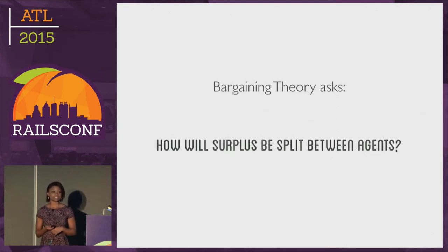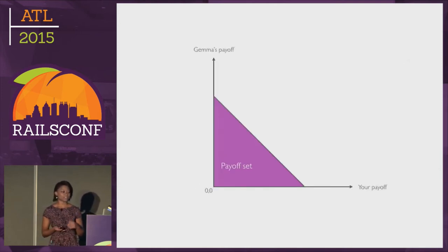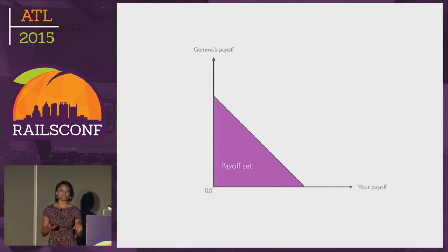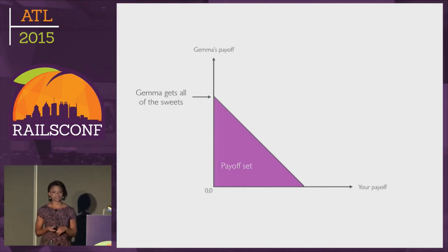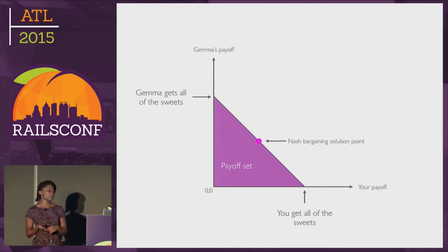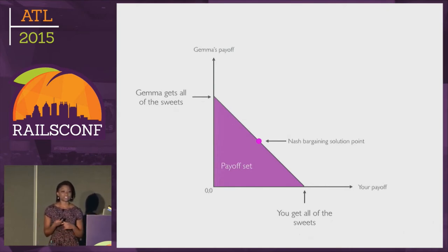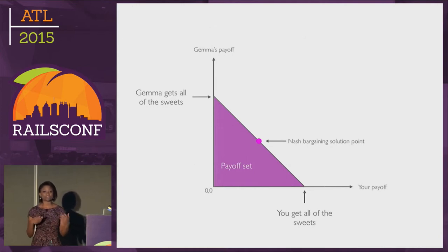One way of answering this is to look at something called the Nash value distribution. We can plot a chart like this that shows all the possible payoffs you can get by dividing the sweets. The outer edge is the line where all of the sweets are taken, and any point inside the purple area means that after negotiations, there are some sweets left behind on the floor. On the axis representing Gemma's payoff, you have the case where she gets all the sweets, and on the axis representing your payoff, you get all the sweets. We find the Nash value solution somewhere on this frontier, where you both have higher utility than if you didn't take any of the sweets.